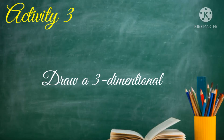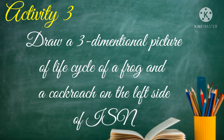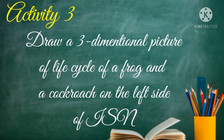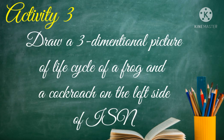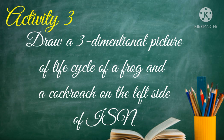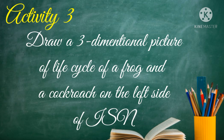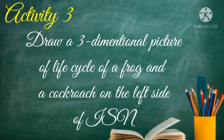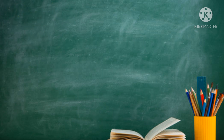For Activity 3, instead of creating a model, draw a three-dimensional picture of the life cycle of a frog and a cockroach on the left side of your ISN to serve as your output.